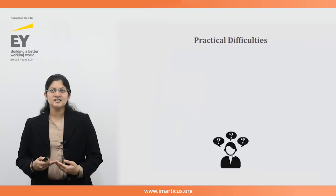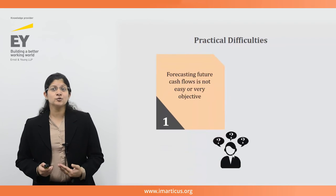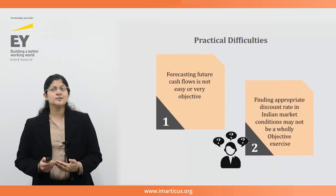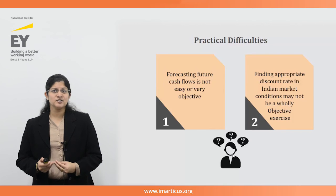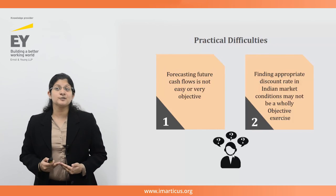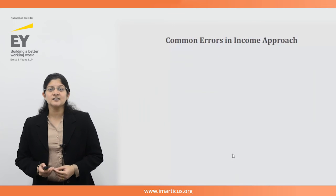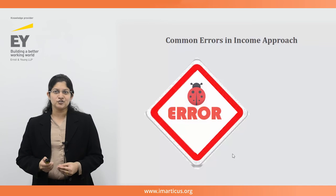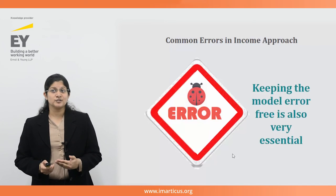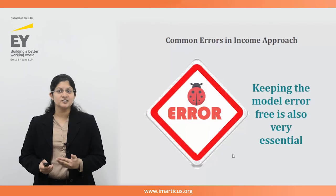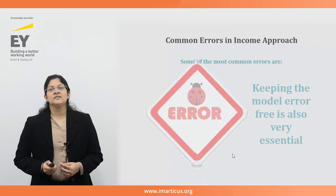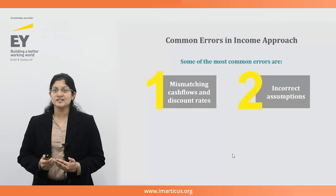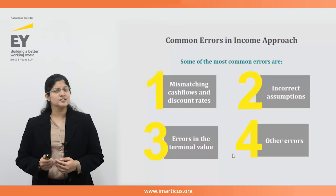Coming to the practical difficulties under this approach: forecasting future cash flows is not easy or very objective in many cases due to industry or company factors. Also, finding appropriate discount rates in market conditions may not be a wholly objective exercise as it is dependent on a lot of factors. After discussing the income approach in detail, let's look at some of the common errors in applying it — keeping the model error-free is critical, otherwise the entire exercise would lead to a wrong value. The most common errors are mismatching cash flows and discount rates, incorrect assumptions, errors in terminal value, and some other errors.